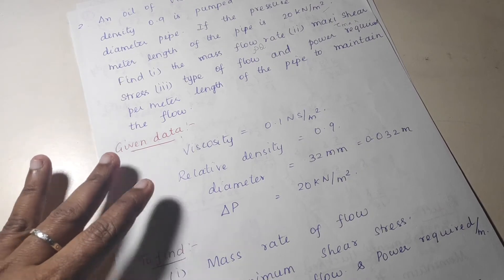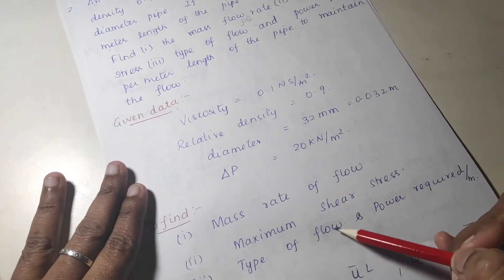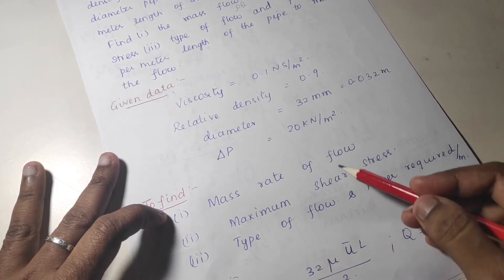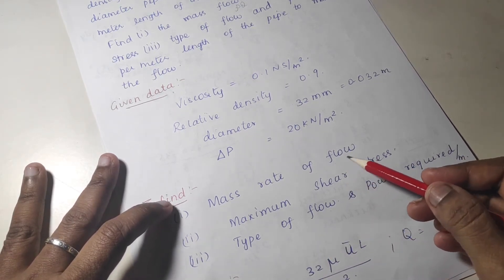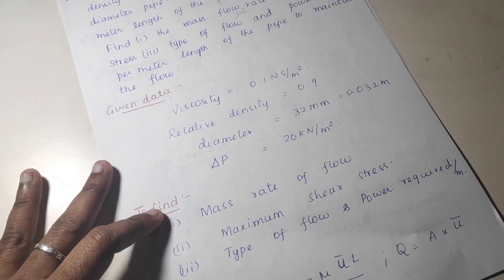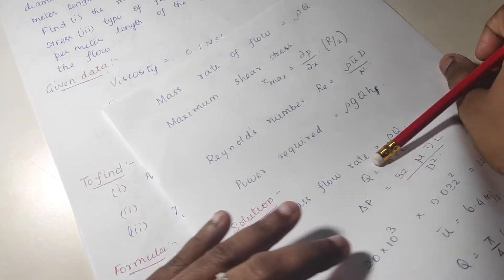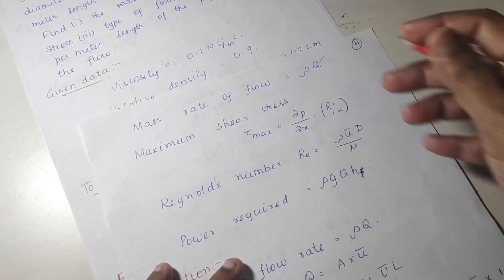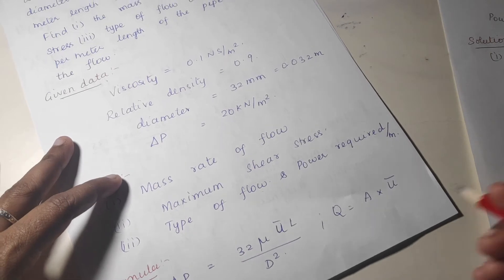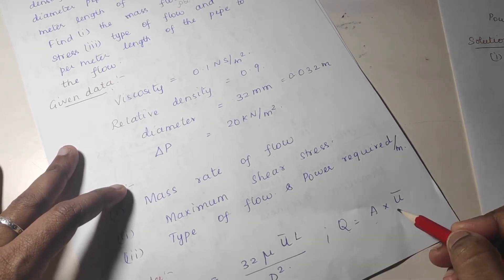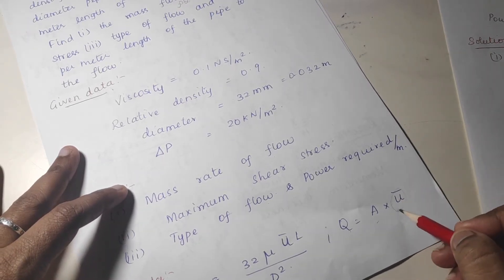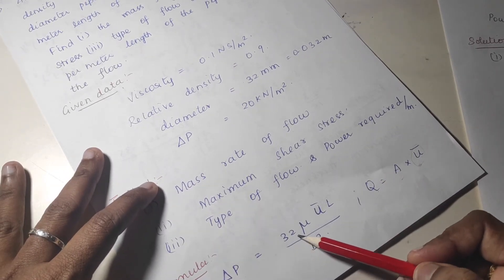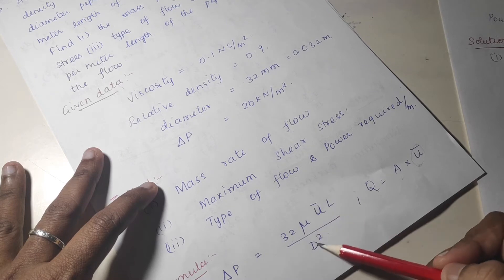Write down the given data and what you have to find, then write the formula. Mass flow rate is density into discharge. To find discharge Q, use Q equal to area into velocity. We do not know the velocity, so to find velocity, use the formula delta p equal to 32 mu u-bar L divided by d squared.